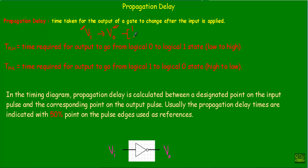Our output could be logic 1 or logic 0. When our output voltage changes from logic 1 to logic 0, this time delay is denoted as TPHL — the time required for the output to go from logical 1 to logical 0, that means high to low state. And if the output changes from 0 to 1, we denote that time delay as TPLH — the time required for the output to go from logical 0 to logical 1, that means low to high.